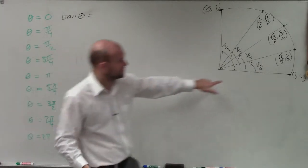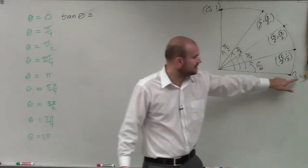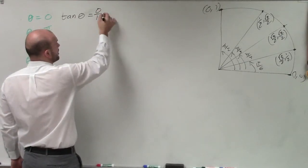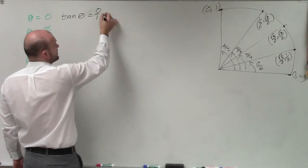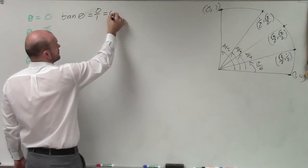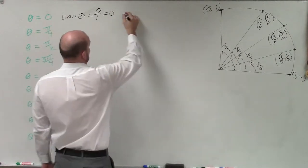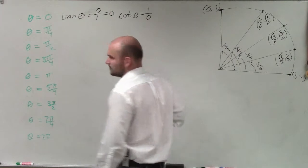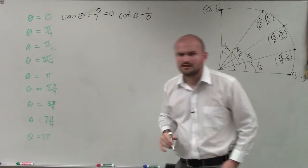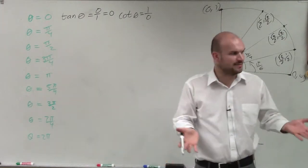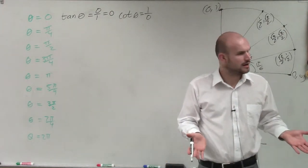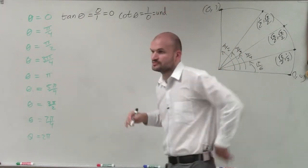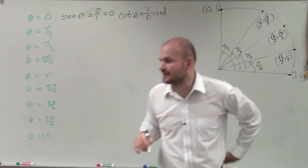Let's look at the angle of 0. The tangent of theta at angle 0 is y over x, so that is 0 over 1, which equals 0. If I did cotangent of theta, that's 1 over 0. Well, we cannot divide by 0, so therefore it's what we call undefined.